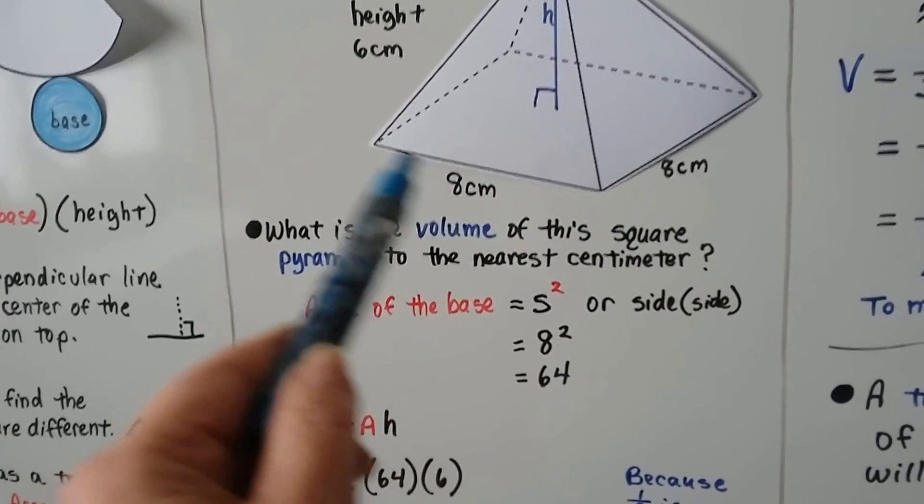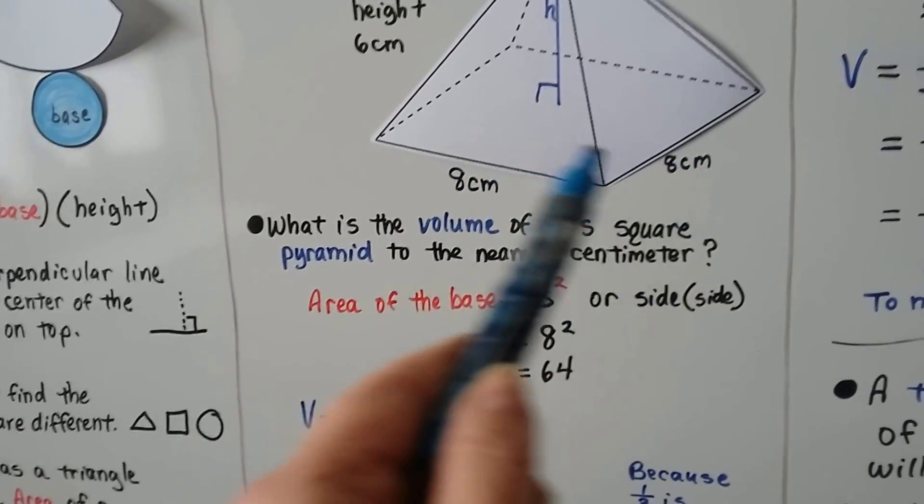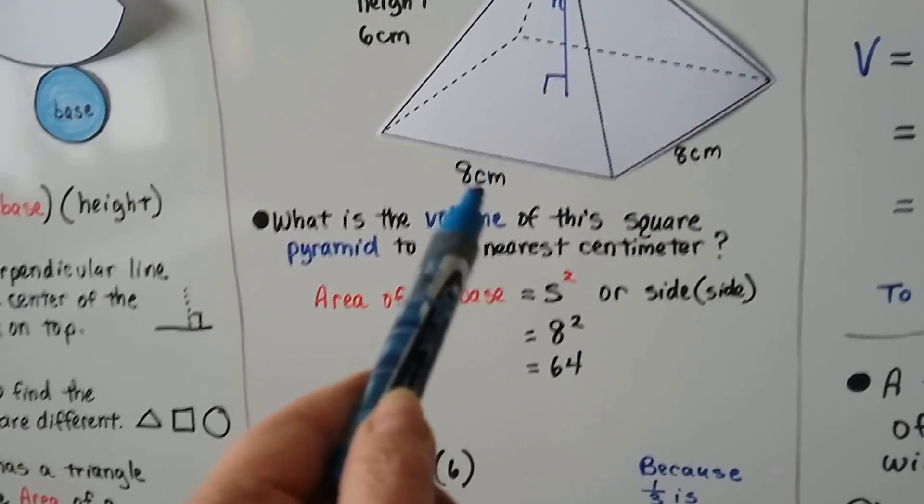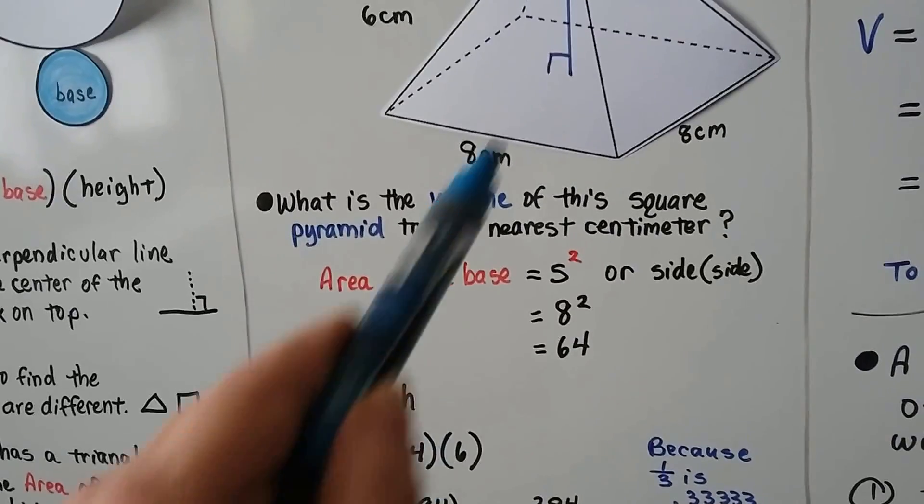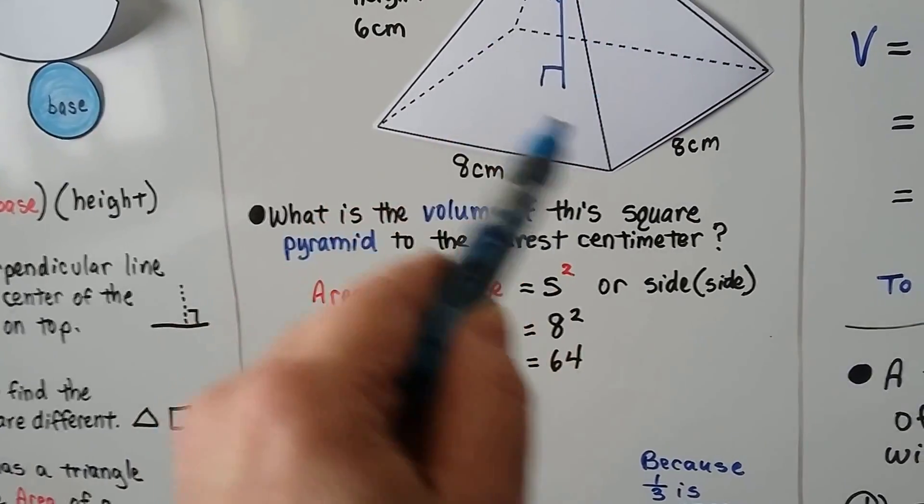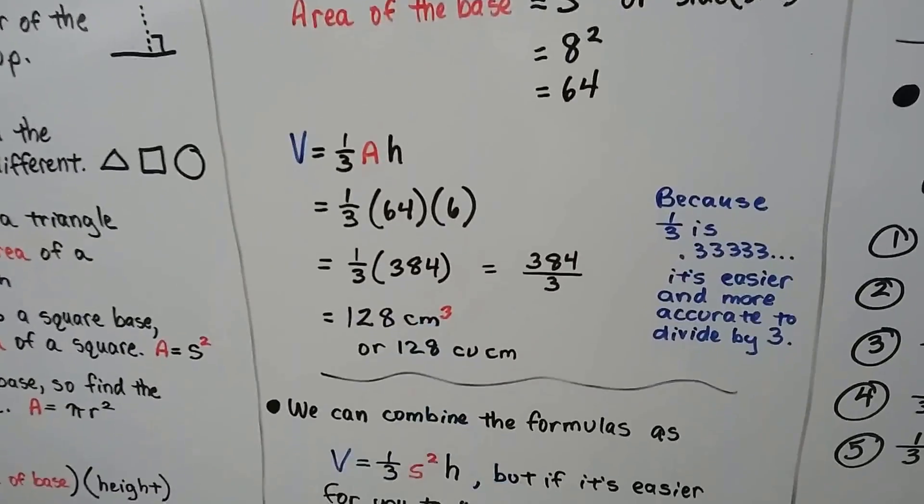And we have cubic centimeters, because that's how many cubes would fill up the volume inside of here. This, eight times eight, is square measure, because we're doing length times width or side times side. That's two measures. As soon as we're doing cubic to fill up the volume, we have a little three exponent.